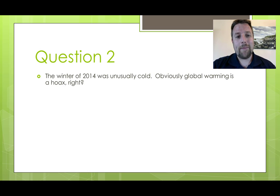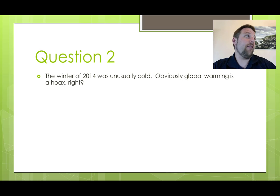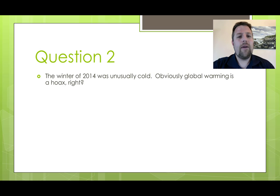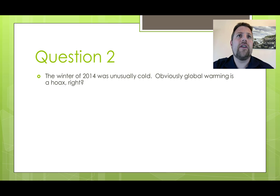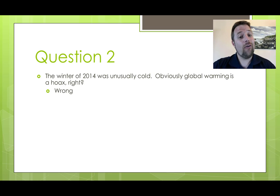Question two deals with global warming. It's spring of 2017, and it was an unusually warm spring — we've barely had a winter. But let's go back to the winter of 2014, which was unusually cold. This was the winter that Boston had many feet of snow and had a hard time getting rid of all the snowpack. So given that bad winter, obviously global warming is a hoax, right? Well, no. Hopefully you said no.